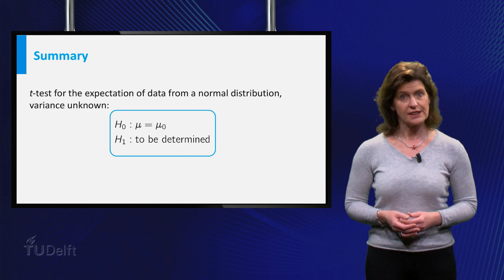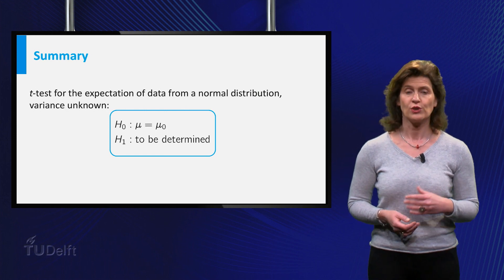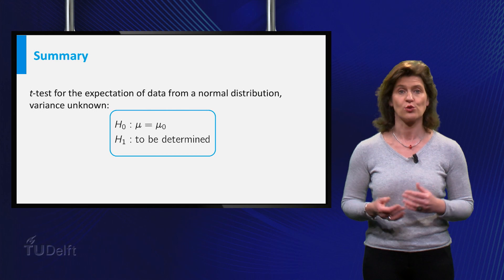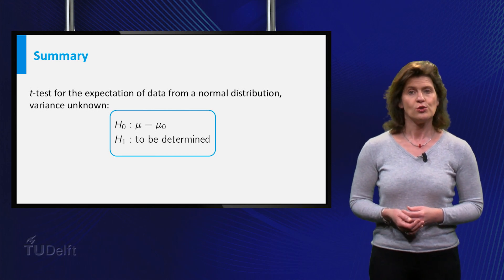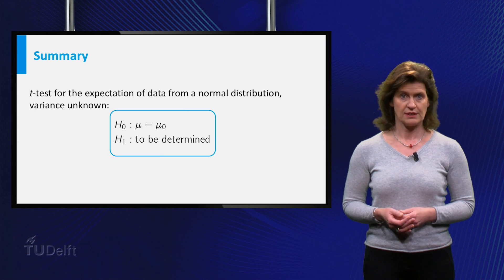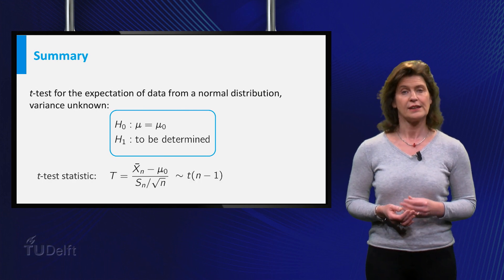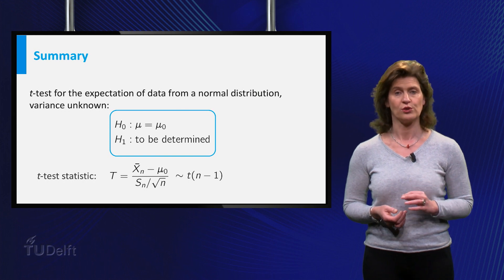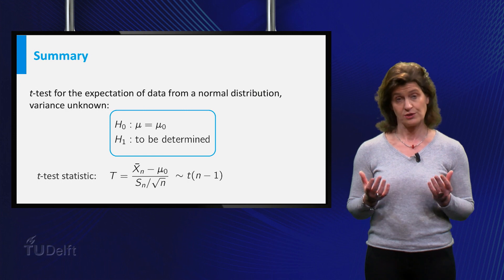So in this video you learned that if you want to test hypotheses comparing an expectation to an a priori given value in the case of normally distributed data with unknown variance, you can use the t-test to do this. And you learned how to compute the t-test statistic that provides you with a numerical value to decide whether to reject the null hypothesis for such a testing problem.